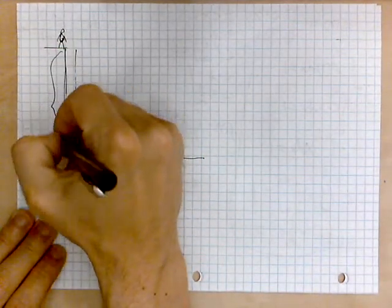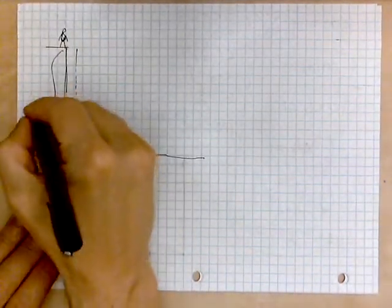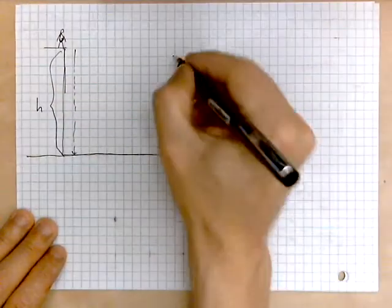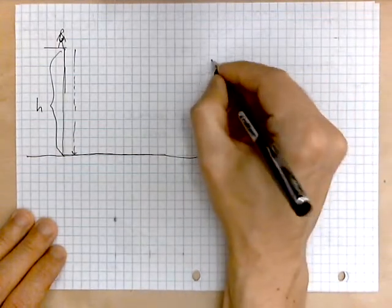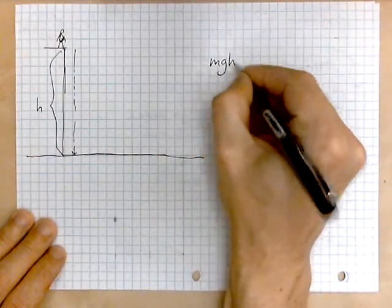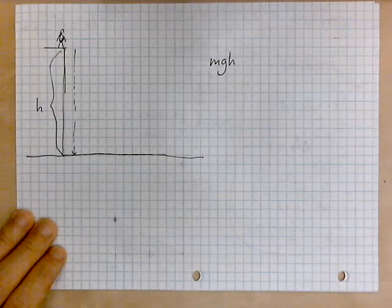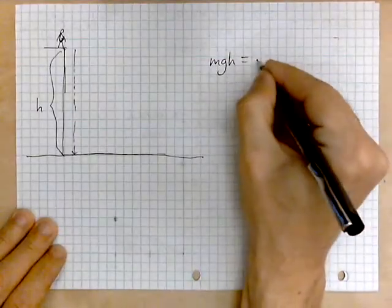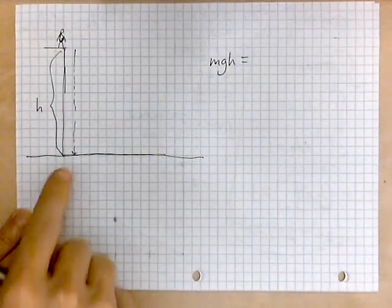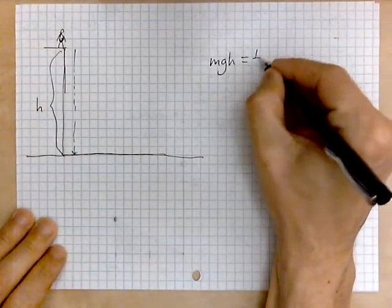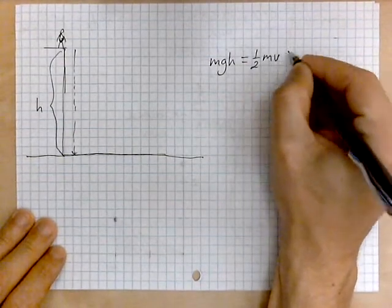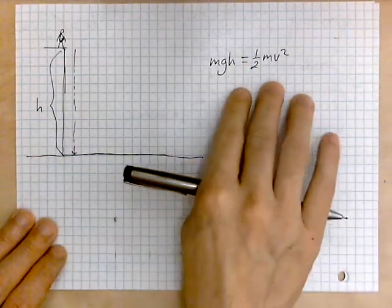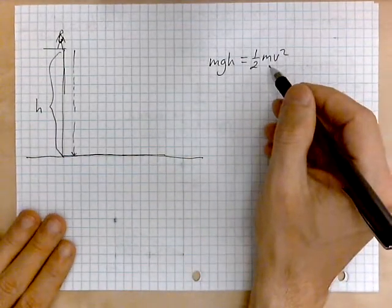So the height is H for now. What we have is the following. By conservation of energy we can write MGH, so the energy stored within the system at the top, becomes the kinetic energy of the object when it strikes the surface, which is one-half mv squared. This is a statement of the conservation of energy. Once again take a look at this.